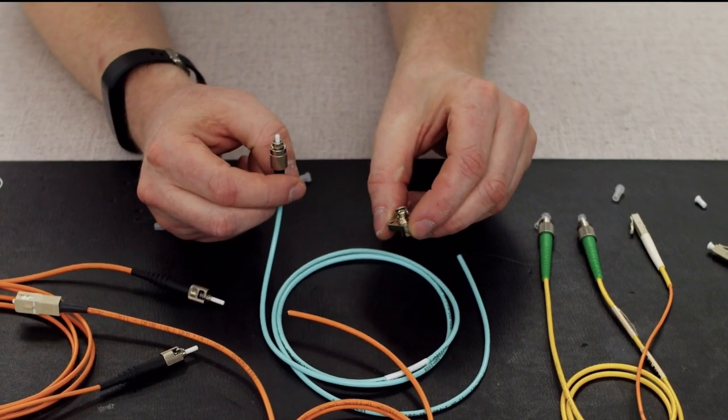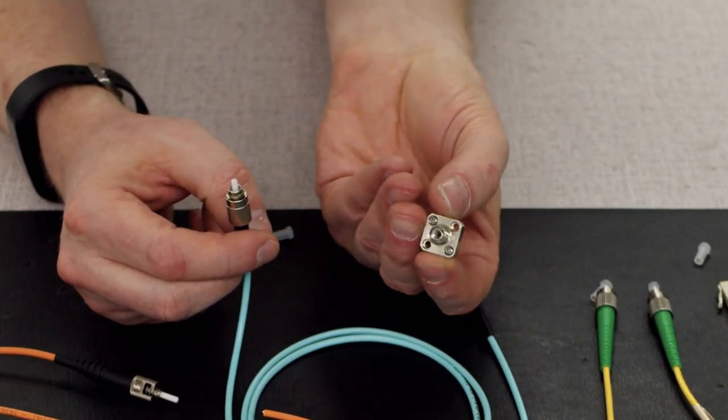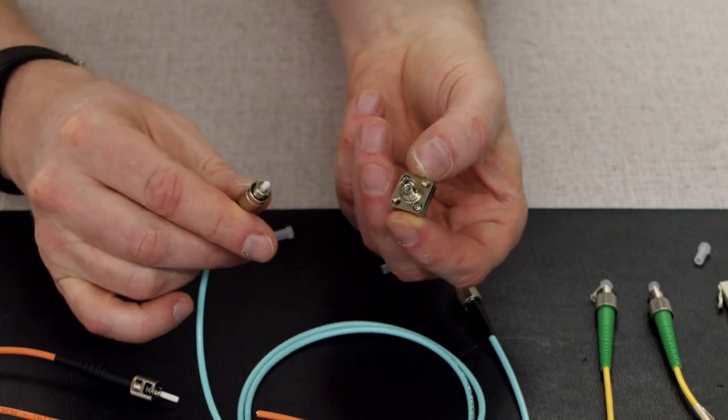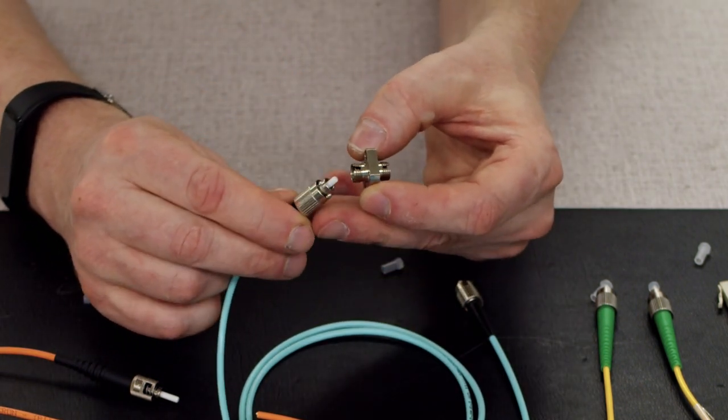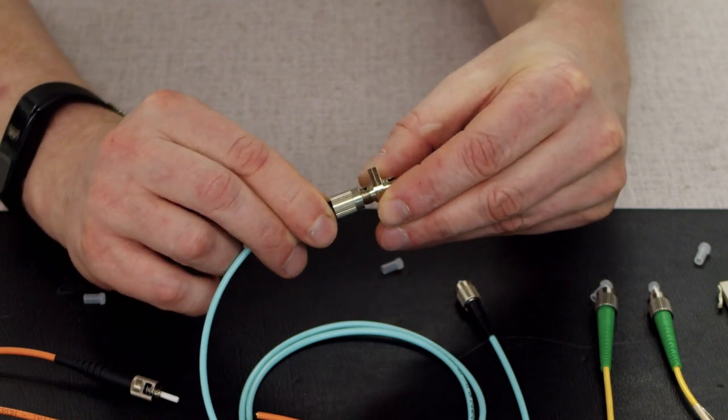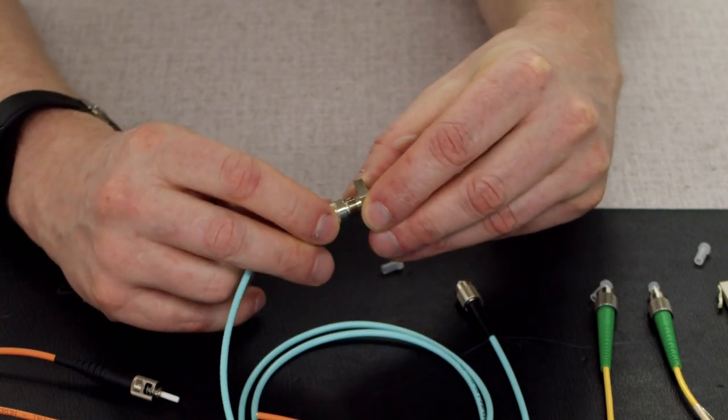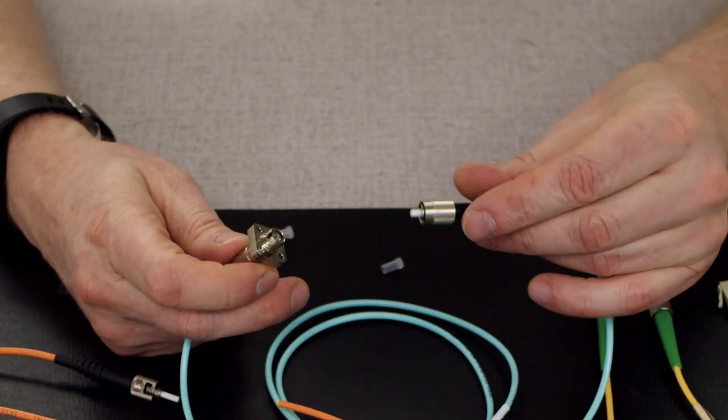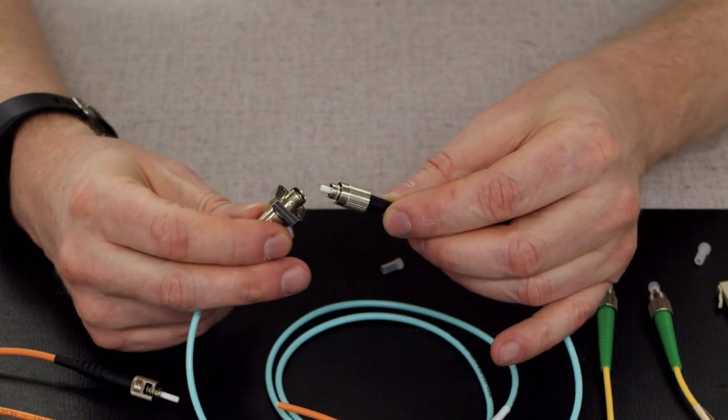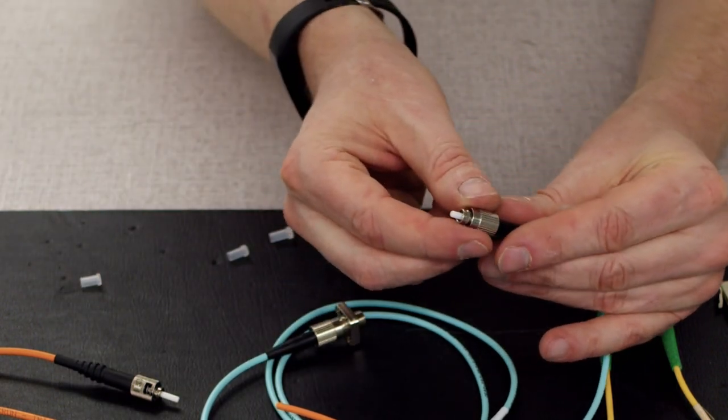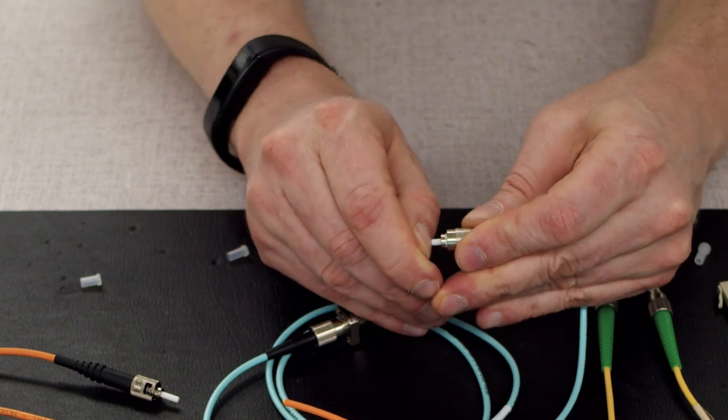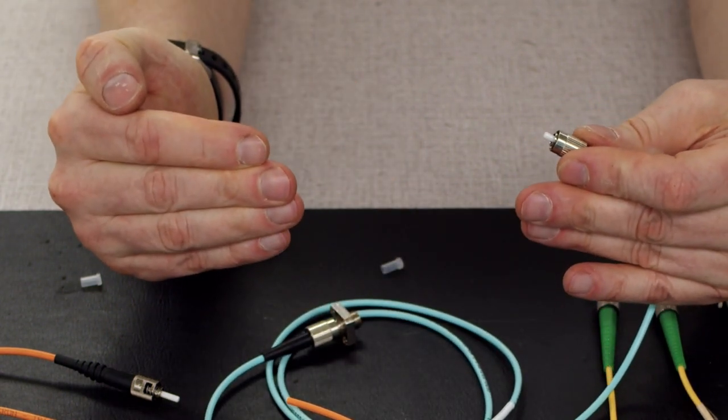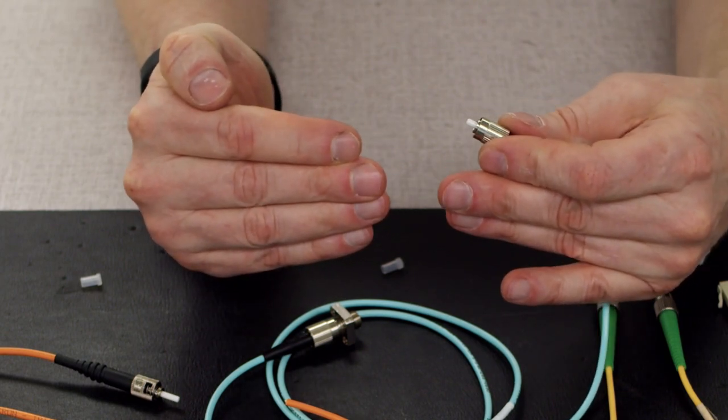But how they work is you always have a mating sleeve in between them. So in the case of these you have a mating sleeve so it looks something like this. It has actually a ceramic sleeve built into the center of it. So you connect one connector up to one side and one up to the other side and these actually have a bit of a spring built into them so you see there's some give to it so that they have a consistent pressure when they mate.